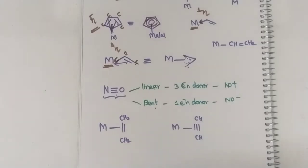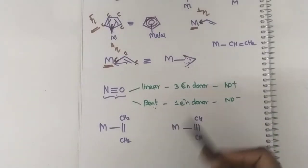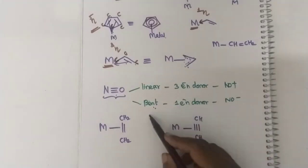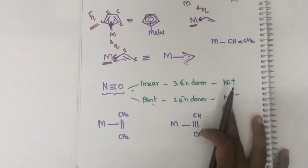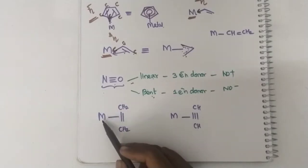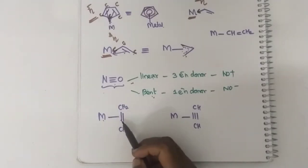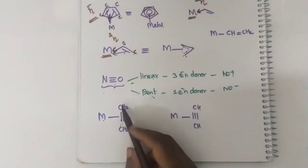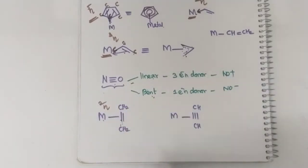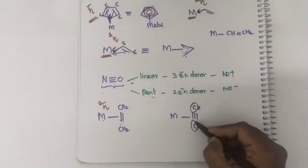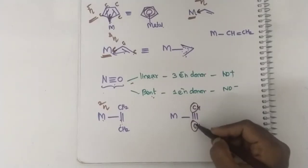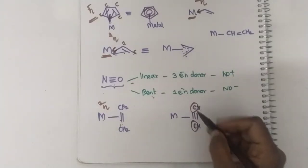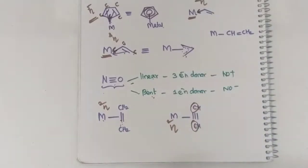NO can be of two types: linear and bent. If it is present in the linear structure, it will donate three electrons. If it is in the bent structure, it will donate only one electron. Now the metal is attached to a pi bond — the pi bond is given by these two carbon atoms — hence eta will be two here. Similarly, even though it is a triple bond, the atoms having that triple bond will be two carbon atoms. Hence the donor atoms will be these two carbons, and here also eta will be two.